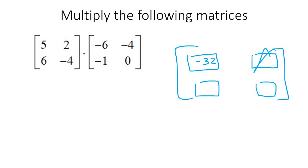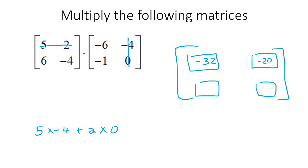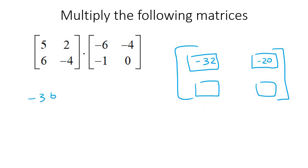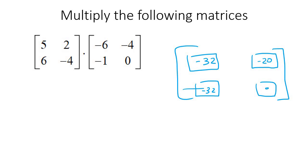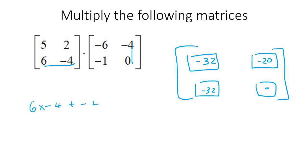For row 2, column 1: that gives -36 plus positive 4, so -32. For row 2, column 2: 6 times -4 plus -4 times 0, which is -24. So our final 2 by 2 answer matrix is: -32, -20, -32, -24.